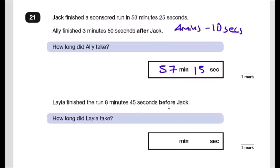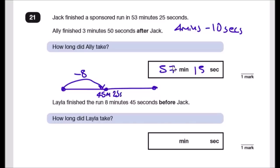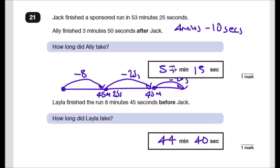Layla finished 8 minutes 45 seconds before Jack. Use a number line: start at 53:25, subtract 8 minutes to get 45:25, then subtract 45 seconds — first subtract 25 seconds to reach 45:00, then subtract the remaining 20 seconds to get 44:40. Layla took 44 minutes and 40 seconds. I hope this helped — give a like, share with your friends, and good luck with your revision!